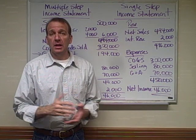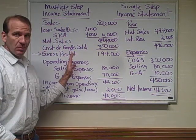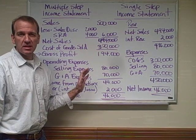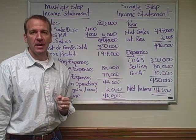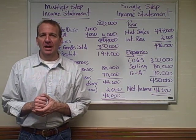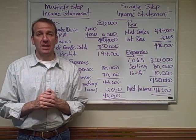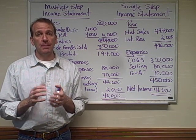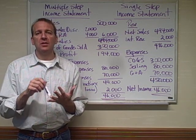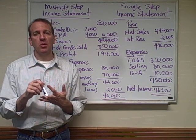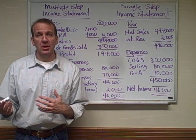Either of these income statements is acceptable. The multiple-step is probably more popular because it's more detailed, but both are acceptable. You need to be familiar with both. Good luck with this chapter — make sure you spend the necessary time to get these things down: multiple-step and single-step, but also the discounts, the returns, and the allowances, both from a buyer's standpoint and from a seller's standpoint. Good luck.